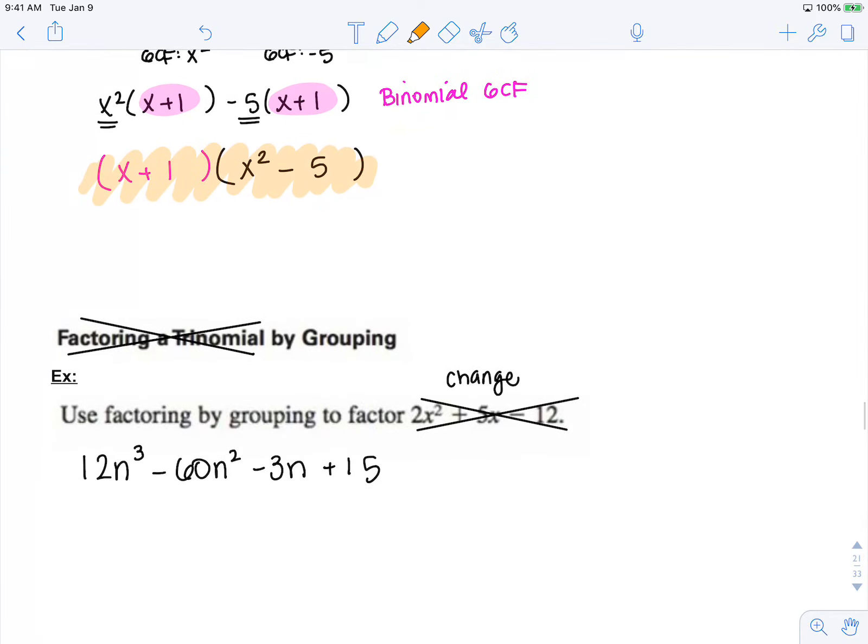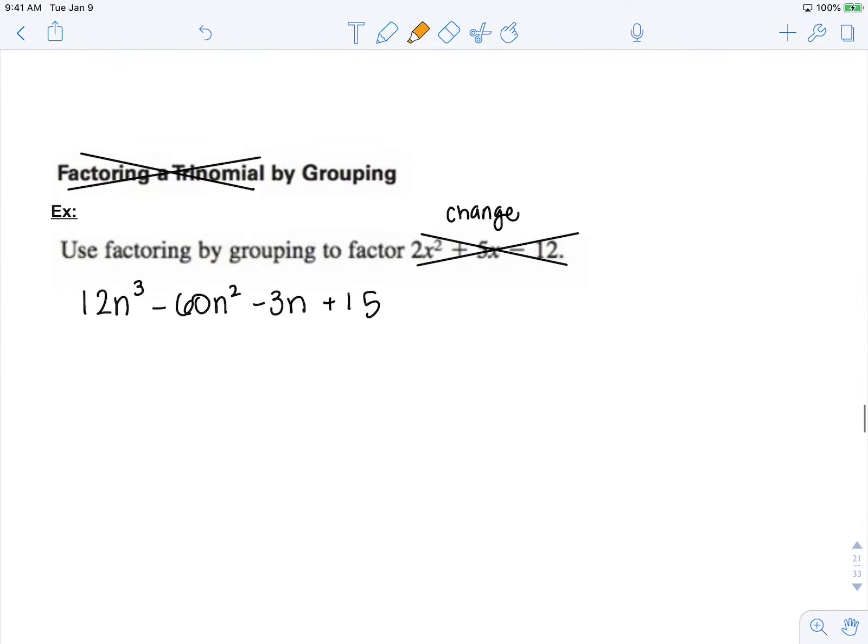So for this next example, change the problem. I want to do another example with four terms. So first, when I look at this problem, I see there's an overall GCF of 3. I need to factor out 3 first. That leaves 4n cubed minus 20n squared minus 1n plus 5.